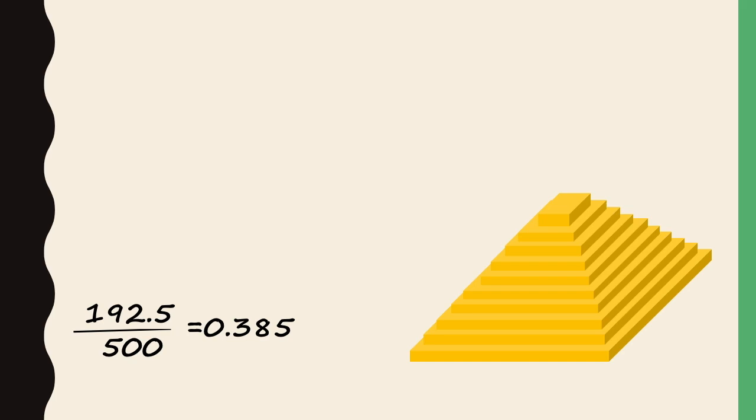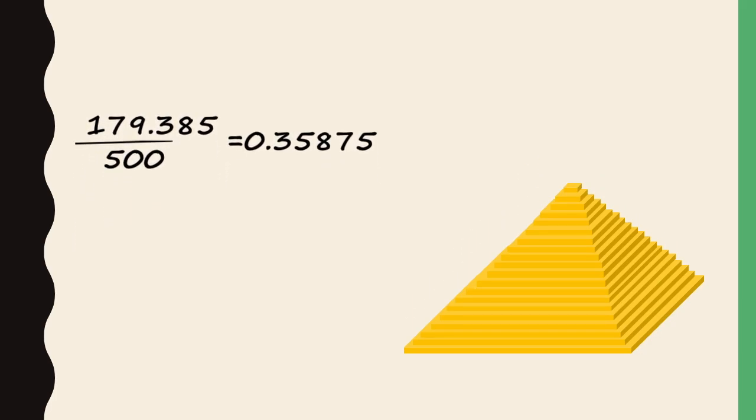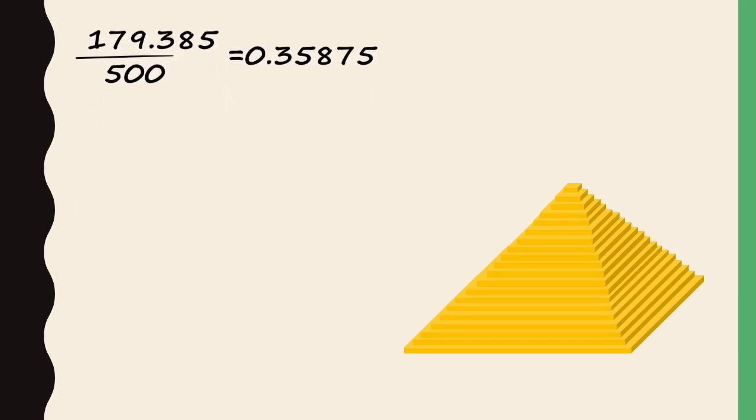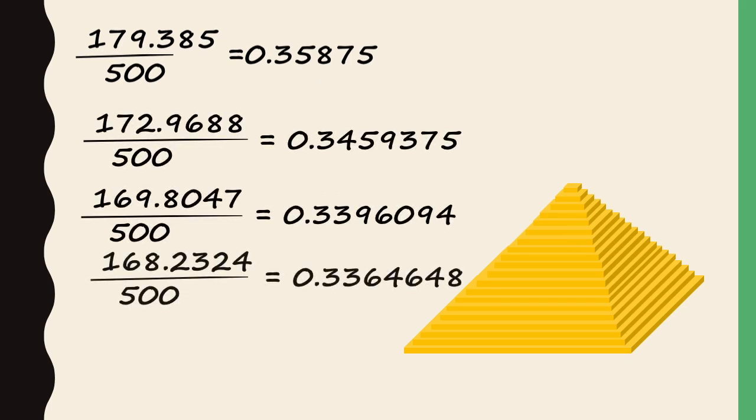And now if we continue in this fashion, decreasing the step sizes so that we'll have more and more slabs, and they'll look more and more like a real pyramid, the ratio of the volume of these pyramids to the volume of a corresponding polyhedron with the same base and same height will get closer and closer to a third.